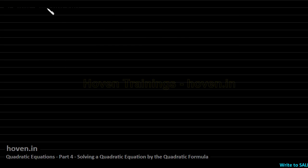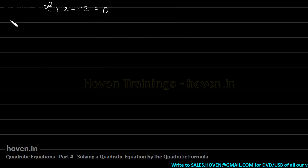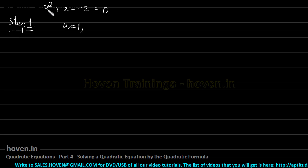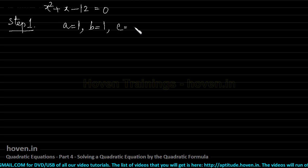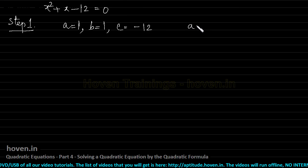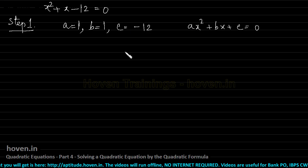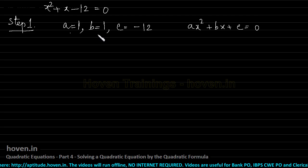Let us start with our first question: x² + x - 12 = 0. Step 1: isolate a, b, and c by comparing with the standard form. The coefficient of x² is a = 1, the coefficient of x is b = 1, and the constant term is c = -12.